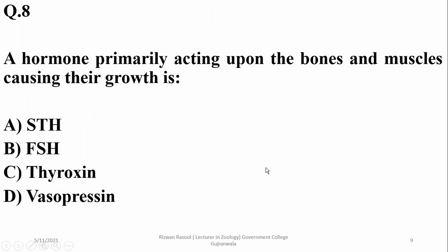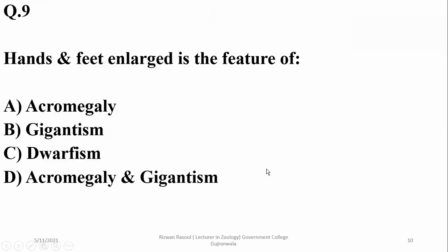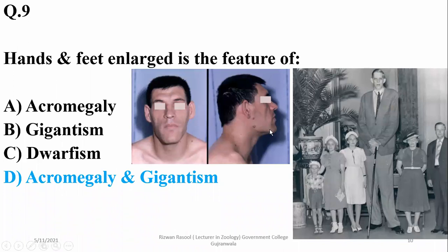A hormone primarily acting upon bones and muscles causing their growth is STH, or somatotrophic hormone. Hands and feet get enlarged in both gigantism and acromegaly. In gigantism there is a very large increase in height, but in acromegaly only the jaws and feet get enlarged. So the right option is D.